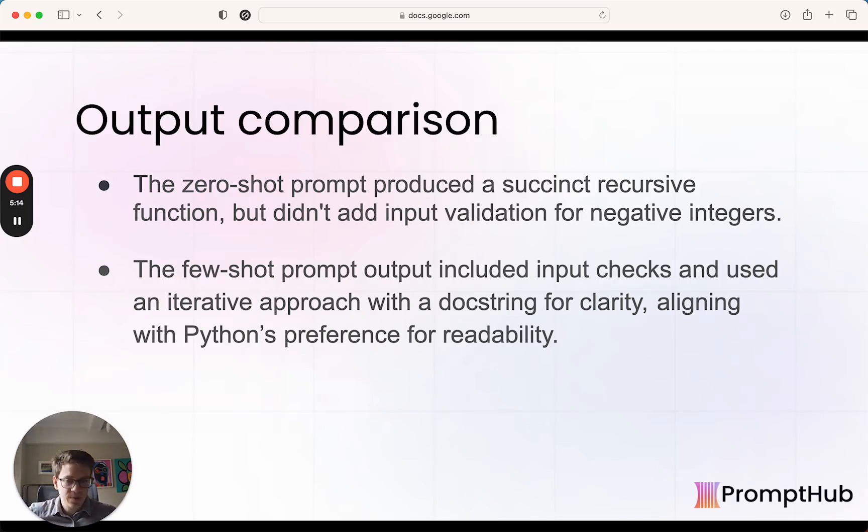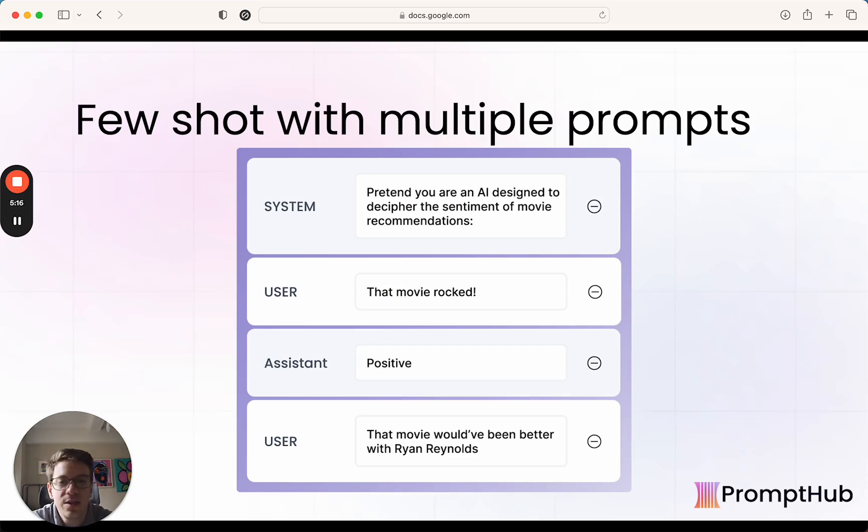The other way to do few-shot prompting is to actually use different messages. These past examples have been one prompt where we're stuffing the examples in there, but you can break it up to be multiple messages if you have access to a tool like PromptHub with our chat testing feature, or if you're making the API request yourself and writing it in the code, you can break up the messages.